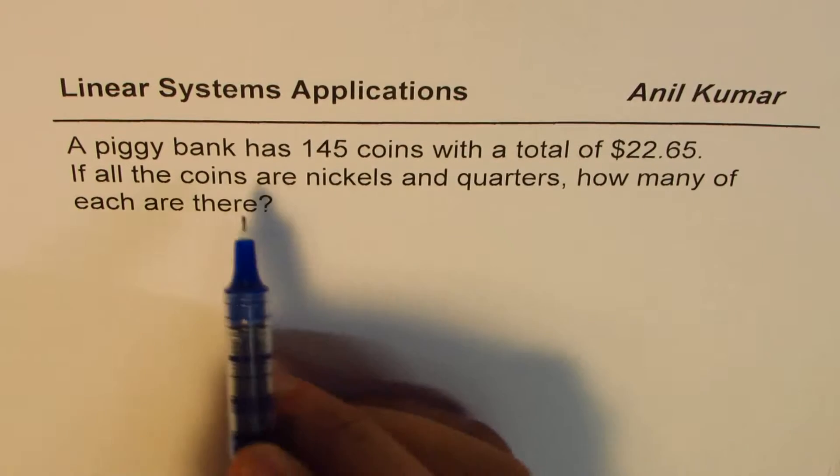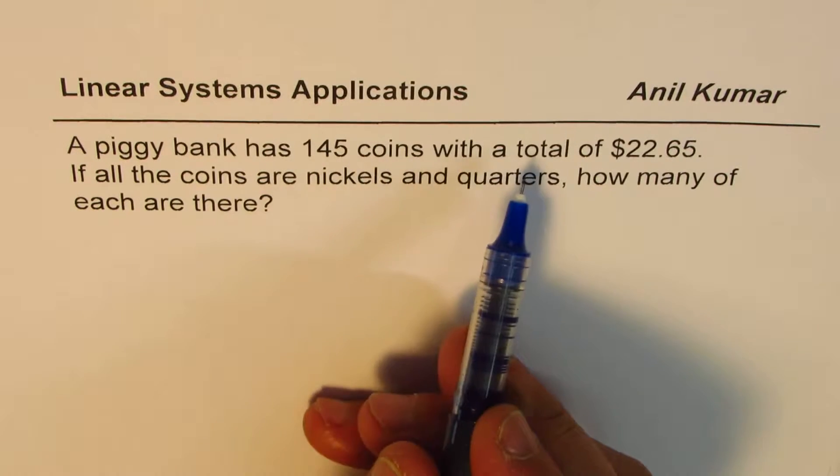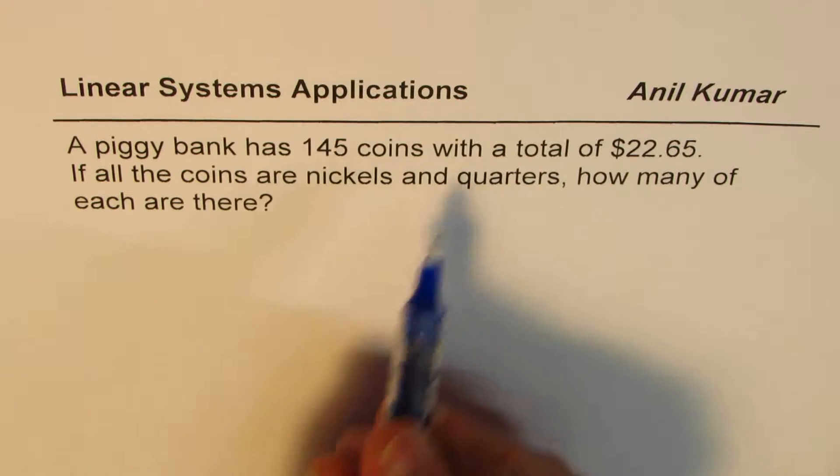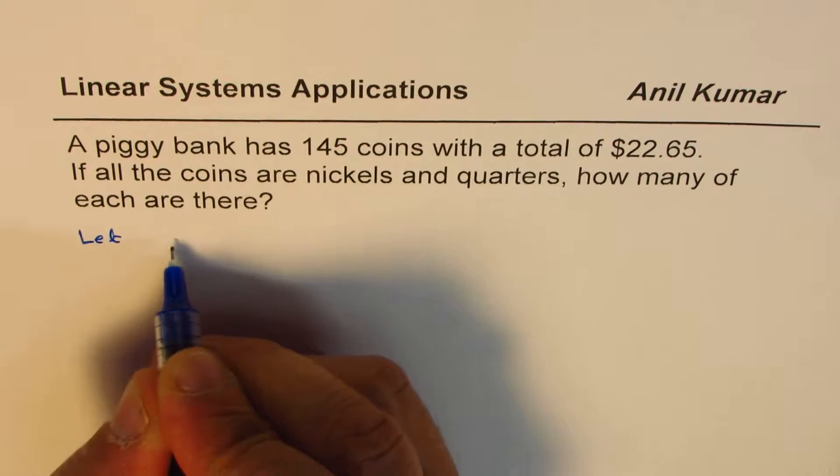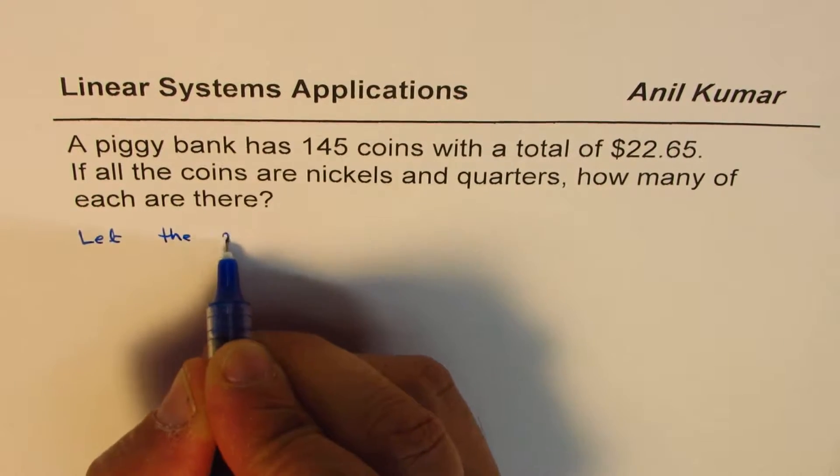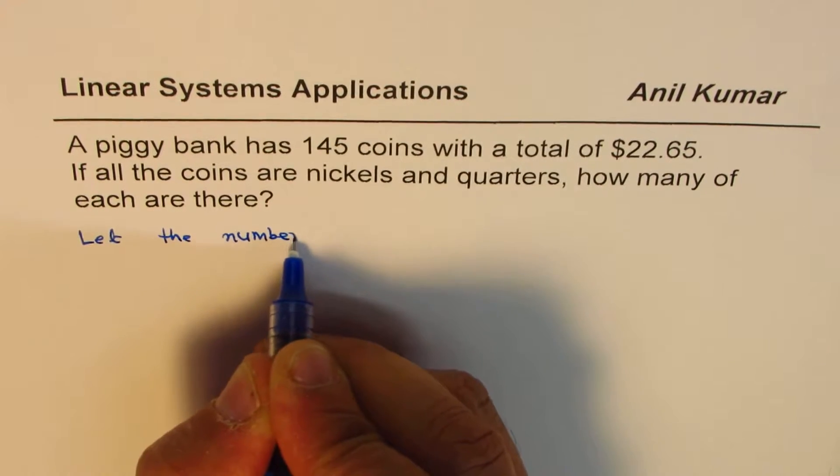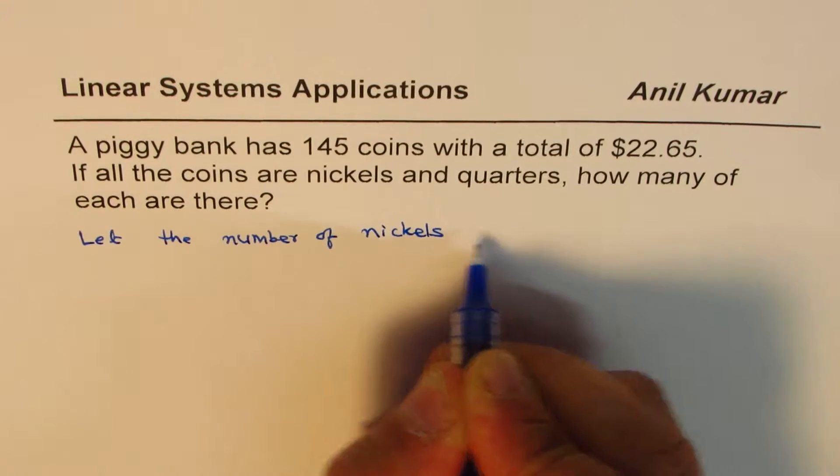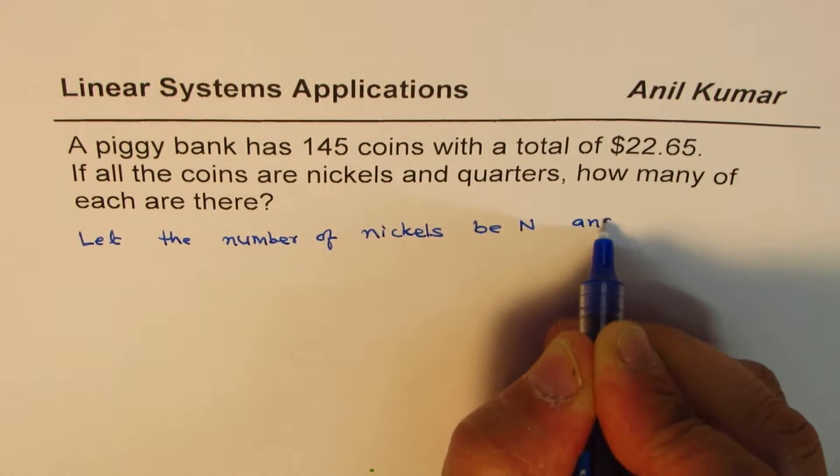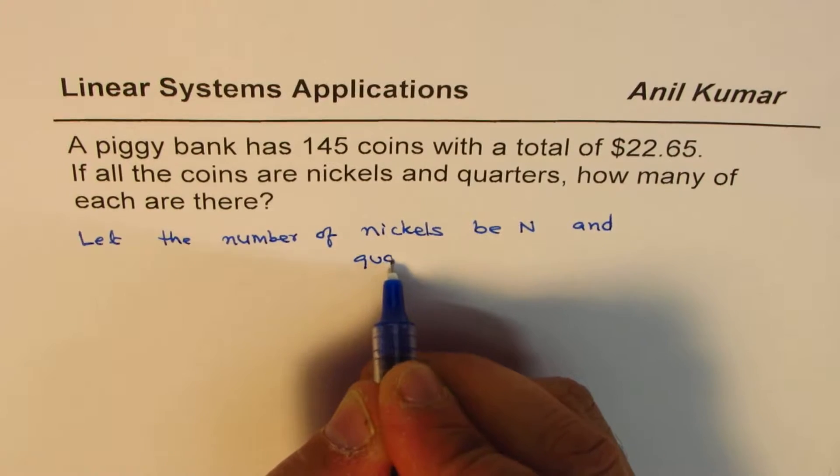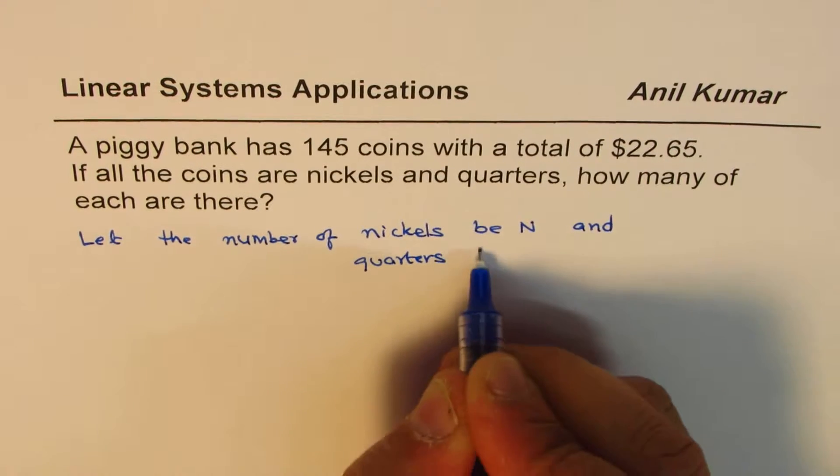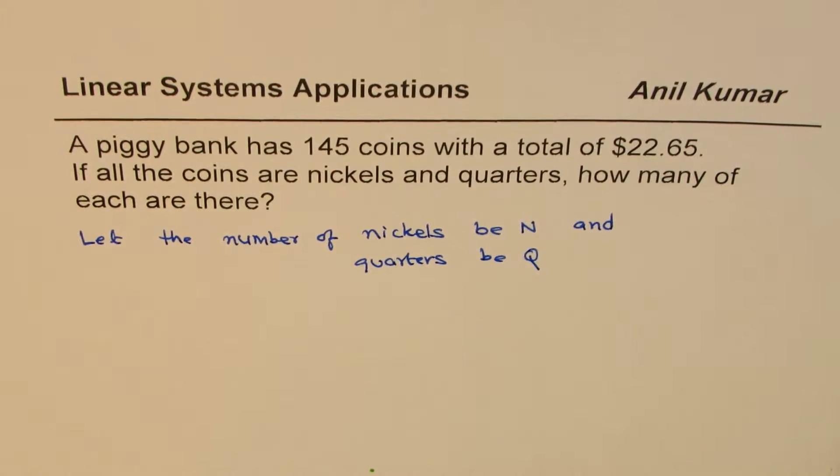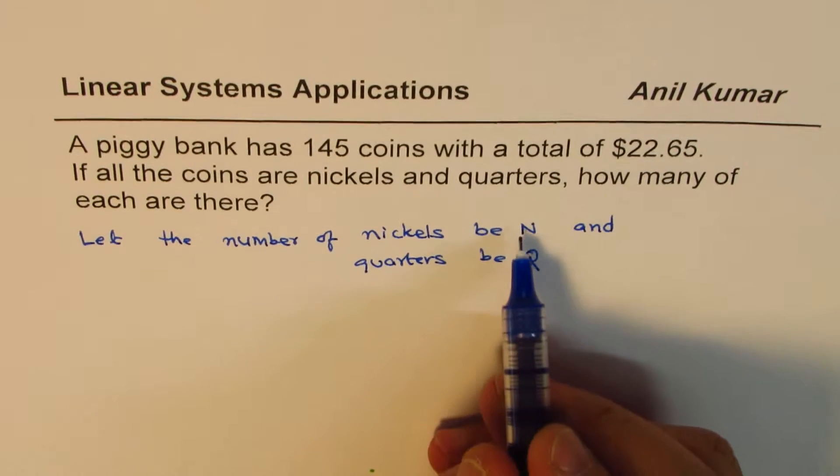So now we know that there are 145 coins in all and all coins are either nickels or quarters. So let's write down the let statement first. Let the number of nickels be N and quarters be Q. So you should define variables which are kind of relevant.